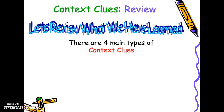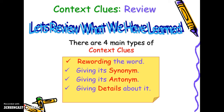So there are four main types of context clues you'll be looking for: rewording, synonyms, antonyms, and details. You will be expected to highlight those to indicate how you know what those words mean on your test.